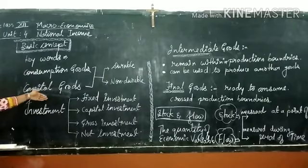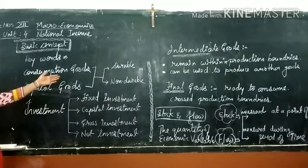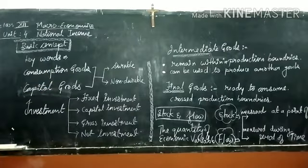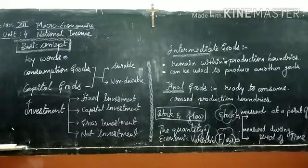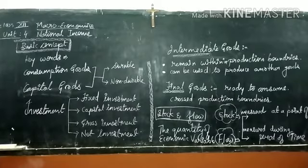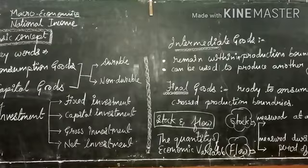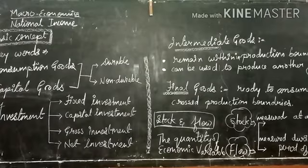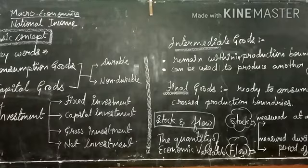If both types of goods are used year over year, then they are called durable goods. And if these goods are finished after single use, then these are called non-durable goods. Investment is different from capital goods. Investment means addition made to the stock of capital during a period of time, especially during a financial year.